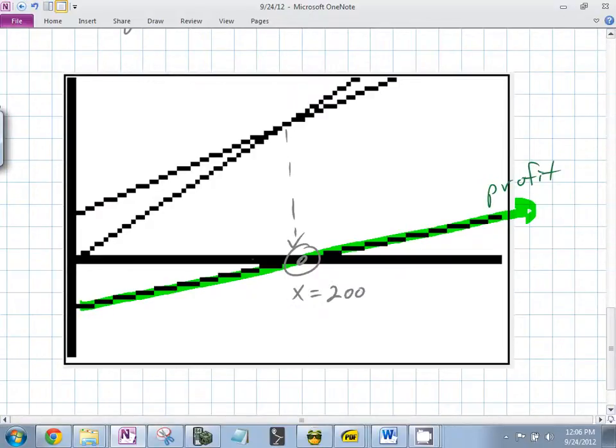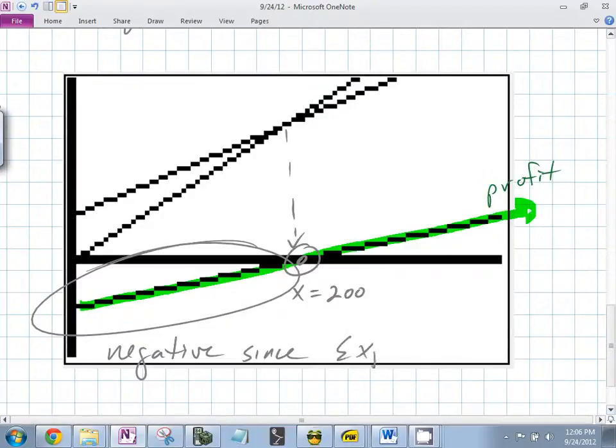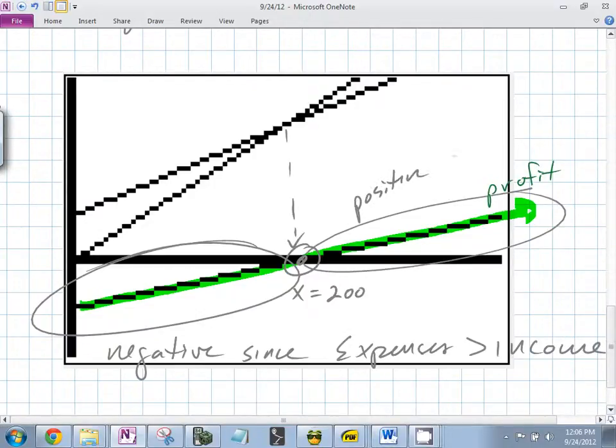Why is this negative right here? Why is it negative right there? Negative since what? Since the expenses are greater than the income. And then right here it's positive because what? Because the expense, let's keep it in the same order. I like that. Because the expenses are less than the income. Right there.